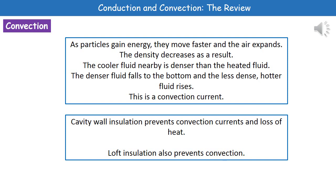If we think about how to reduce convection, we've got a couple of methods we use in our homes. The first is cavity wall insulation, and the second is loft insulation. The way they both work is by preventing convection currents. If we prevent those convection currents, we're going to reduce the amount of heat we lose from our homes via convection.